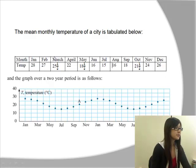When it's January, it was 28 degrees. February, 27 degrees. March, 25.5. April, 22 degrees. May, 18.5, and so on.